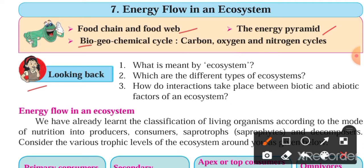Question number three: how do interactions take place between biotic and abiotic factors of an ecosystem? Every living organism requires specific abiotic factors for its survival. For example, human beings — living things — need abiotic factors such as water and air.